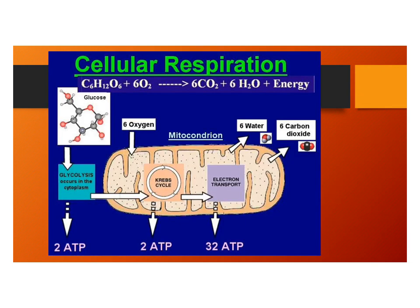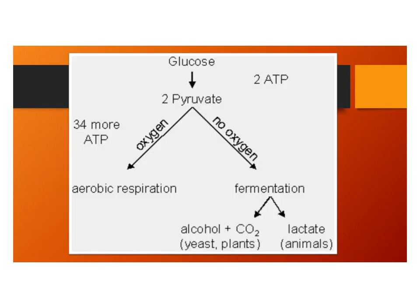Here's an overview of the whole process. Glucose enters glycolysis — you get two ATP out and it's split into two pyruvate molecules. It then enters the Krebs cycle, giving two more ATP, with carbon dioxide given off. Finally, it enters the electron transport chain, yielding 32 more ATP. In total: one glucose molecule gives you 36 ATP with oxygen through aerobic respiration. Without oxygen, you enter fermentation — either lactic acid fermentation in muscles, or alcoholic fermentation by yeast and bacteria, yielding only two ATP.